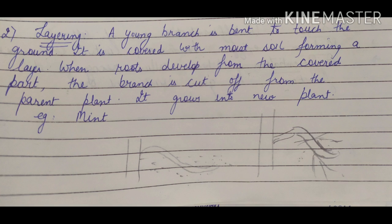Now let us learn about layering. Layering is also a type of vegetative propagation carried out by humans in fields and labs. In layering, the stem of the plant is bent to the ground and covered with soil. Adventitious roots emerge from the plant parts covered with soil. The attached stem with developing roots is known as a layer, which is finally cut off from the parent plant and then grows into an independent plant.